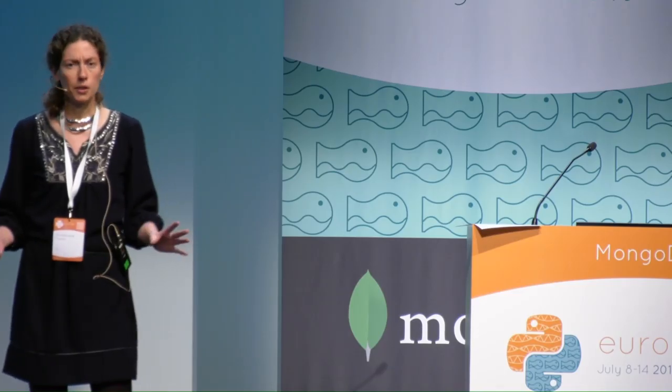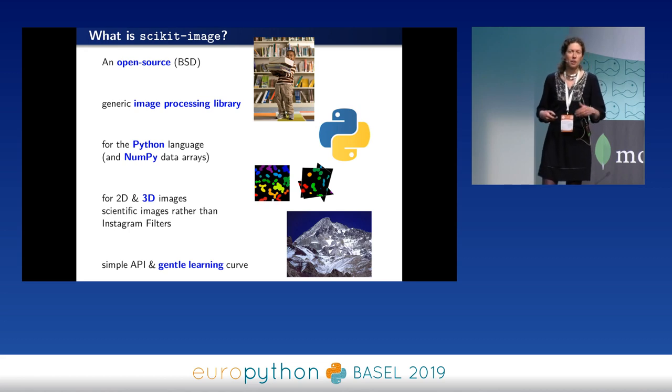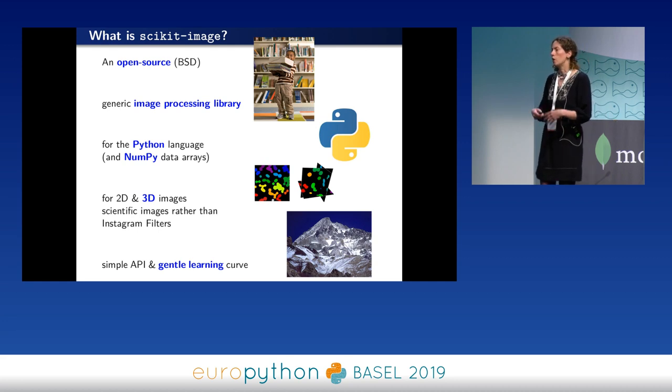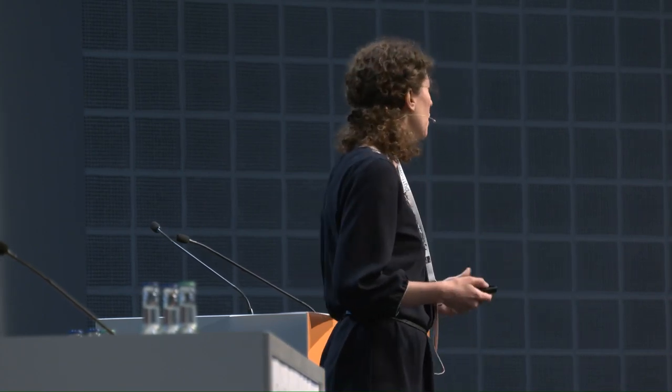It's open source — all the content I'm going to cover today will be open source, BSD or MIT licensed. It's for Python, obviously here at EuroPython, using NumPy data arrays as images. Compared to other image processing tools, one specificity is that scikit-image works well with 2D, but also with 3D images, sometimes with ND images. Like in science you have MRI, CT — a lot of modalities where you have 3D images. And scikit-image tries to have a consistent and simple API and also good documentation and a gentle learning curve so that when you're getting started with image processing, you can get started quite smoothly and learn by yourself.